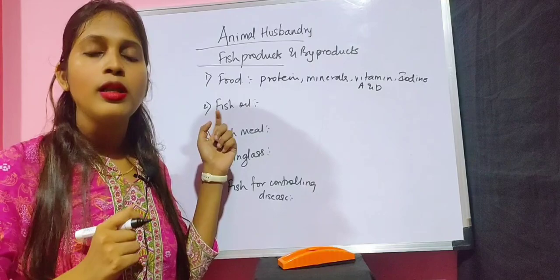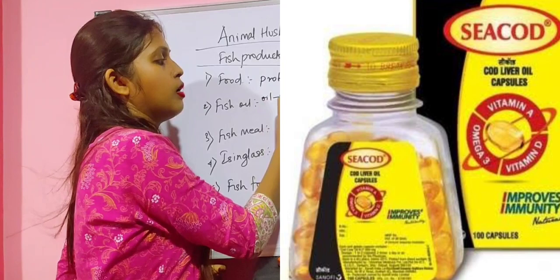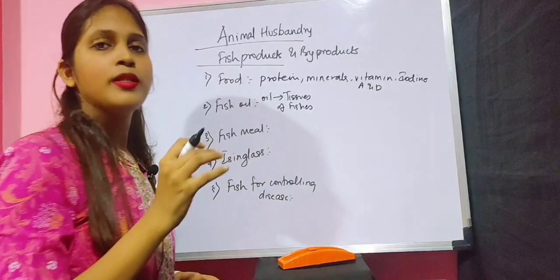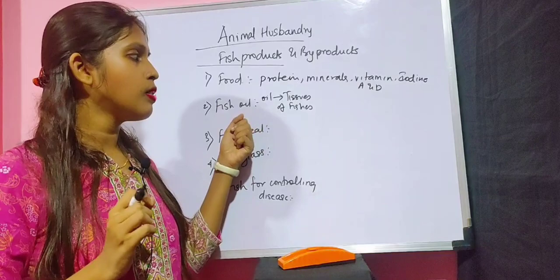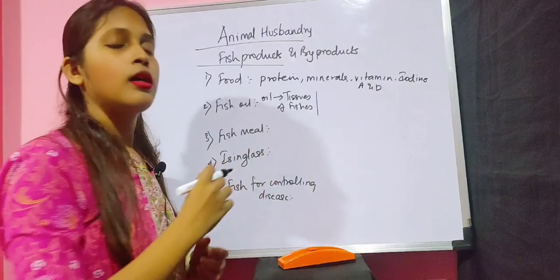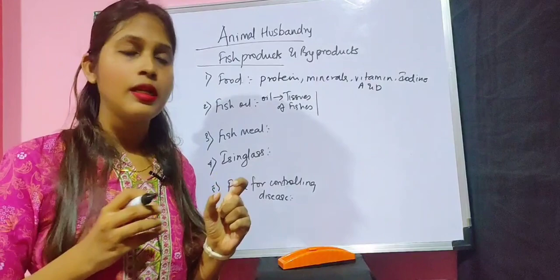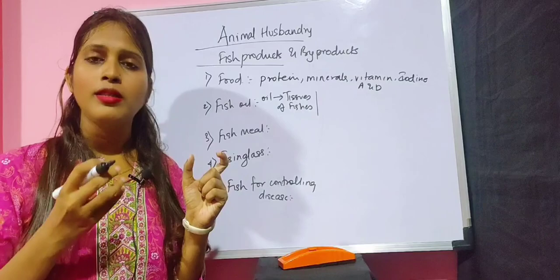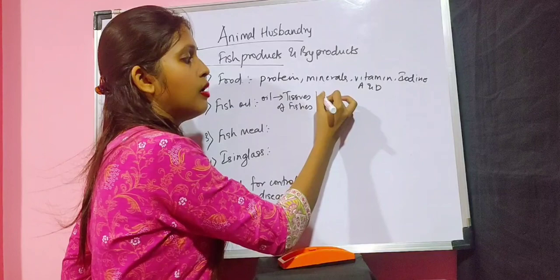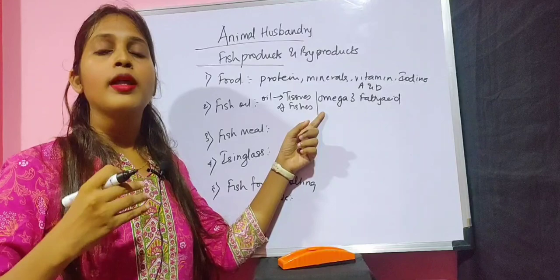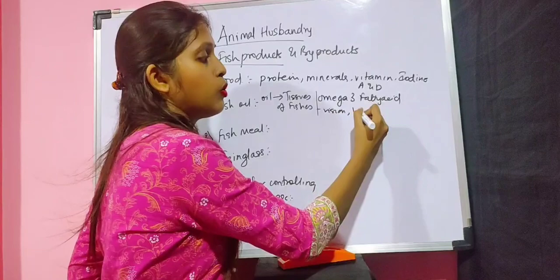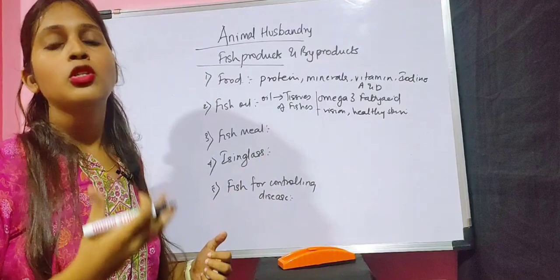The second byproduct is fish oil, obtained from the tissues of specific marine fishes. A well-known example is cod liver oil. This oil is used as a supplementary capsule to boost immunity. Fish oil is rich in omega-3 fatty acids, which are very beneficial — they improve vision, give healthy and glowing skin, boost immunity, and provide stamina.